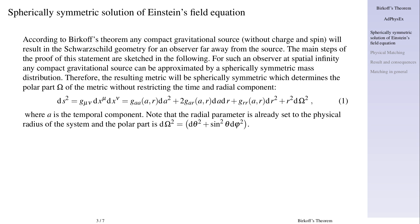Where a is the temporal component. Note that the radial parameter is already set to the physical radius of the system and the polar part is d omega squared equals d theta squared plus sine squared theta d phi squared.